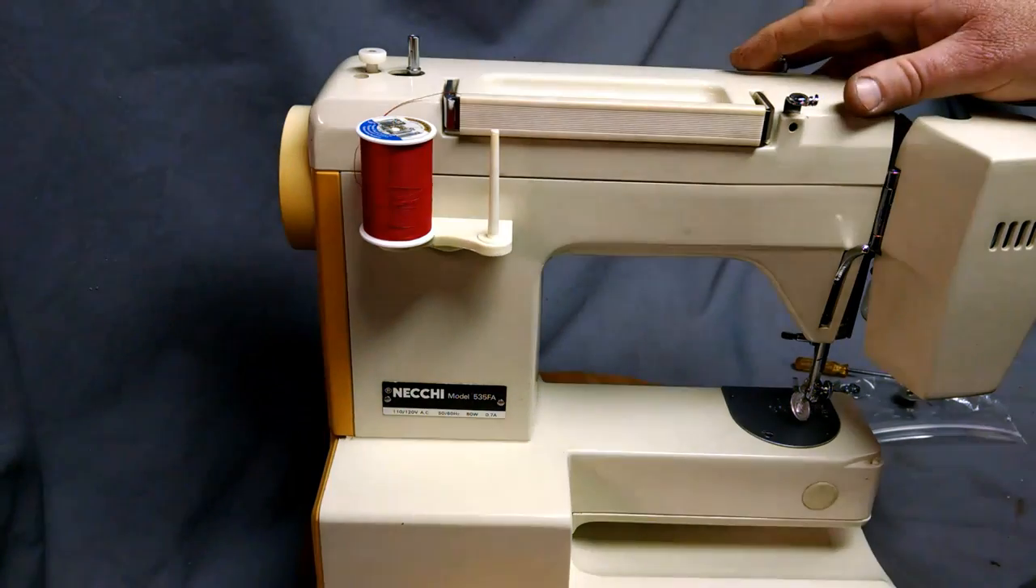So for threading, we start with our rear spool pins. And then we come through to the first thread guide, which is actually a curled guide.